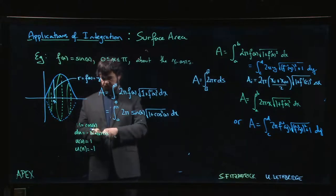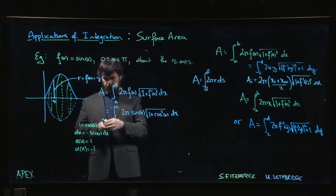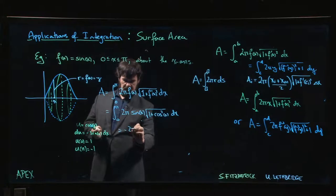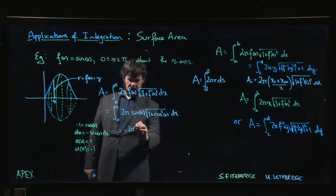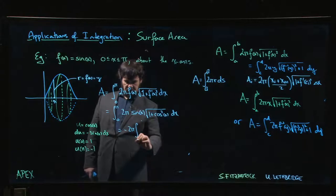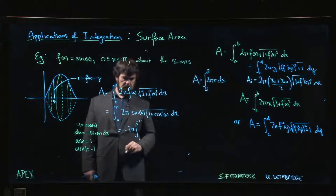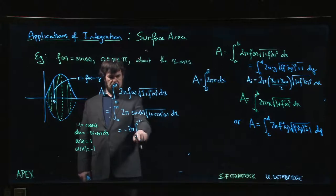So we make that change of variables. We get, let's bring that 2 pi and the minus 1 out, this minus sign here out front. Now, the integrals go from 1 to minus 1. Maybe we want the minus 1 on the bottom. We can flip the limits.